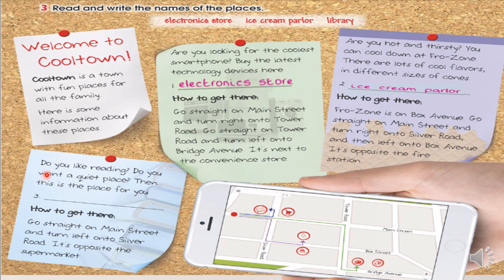Seguimos. ¿Te gusta leer? ¿Quieres un lugar tranquilo? Este es el lugar para ti. ¿Dónde podemos leer? Library. ¿Cómo podemos llegar allí? Vamos de frente por la calle principal. Luego doblamos a la izquierda en la carretera Silver. Eso queda opuesto, al frente del supermercado. Very good students.